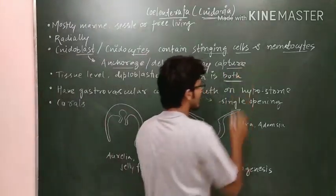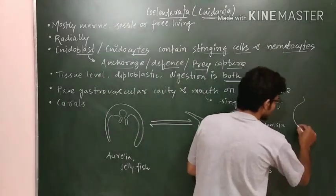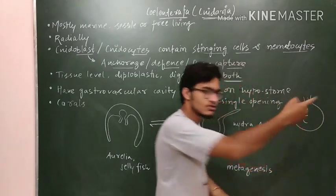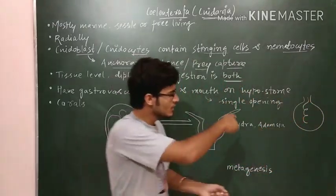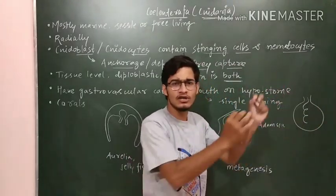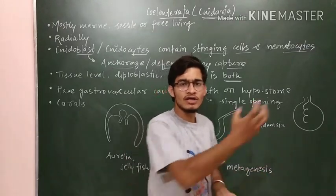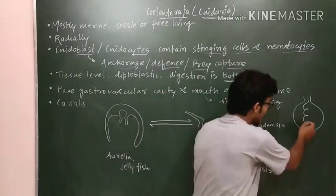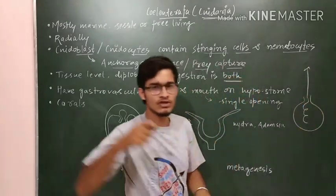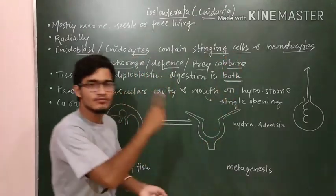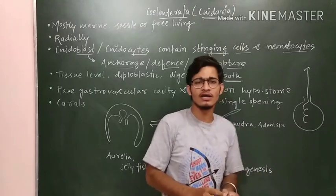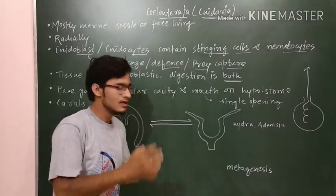The third function is prey capture. The structure of the nematocyst includes a lasso-like element. Whenever the Coelenterata recognizes an enemy or wants to anchor or capture prey, it throws this lasso outward - that is why it is called the stinging cell. It strikes the target organism and similarly can capture prey as well.